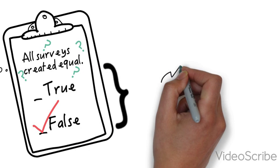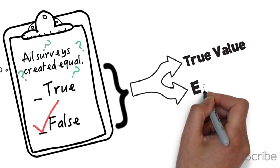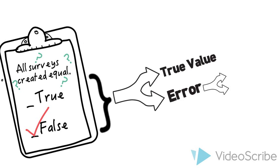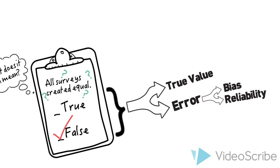Answers to questions on a survey are generally considered to be made up of two components. First, information about the true value of whatever is being asked about. And second, error resulting from a lack of reliability or the presence of bias in the question itself.